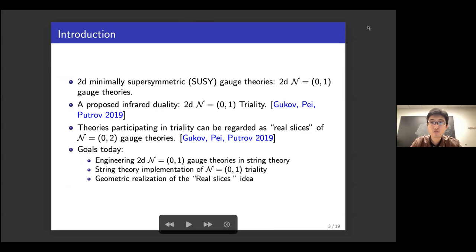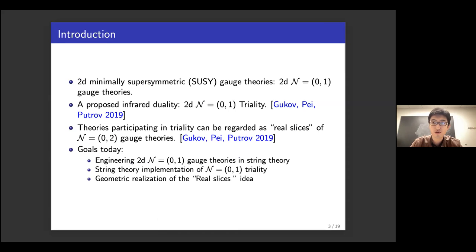2D minimally supersymmetric gauge theories have only one real supercharge — (0,1) supersymmetry in 2D. This class of theories is less studied compared to 2D gauge theories without supersymmetry or with enhanced supersymmetry, but there are interesting known features.